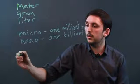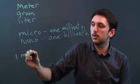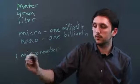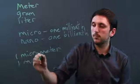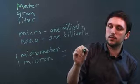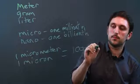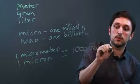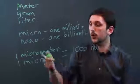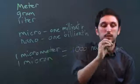So one micro, say micrometer, which is also called one micron, equals 1,000 nanometers, which is not called a nanon for some reason. So we have one micrometer is 1,000 nanometers.